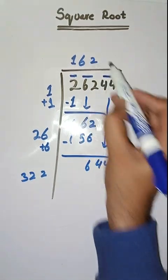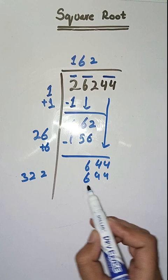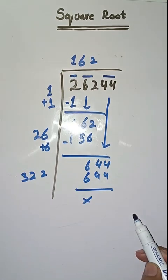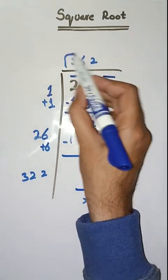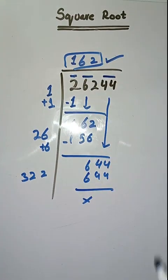So it is completely solved. So square root of 26244 is 162. Hopefully you like this video.